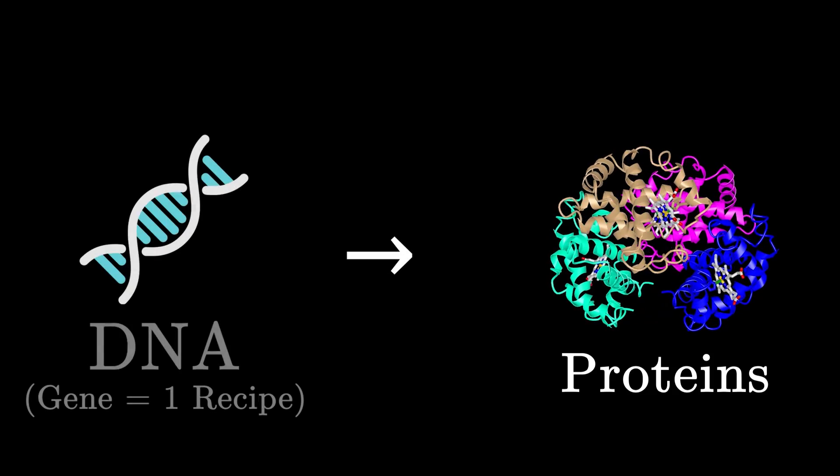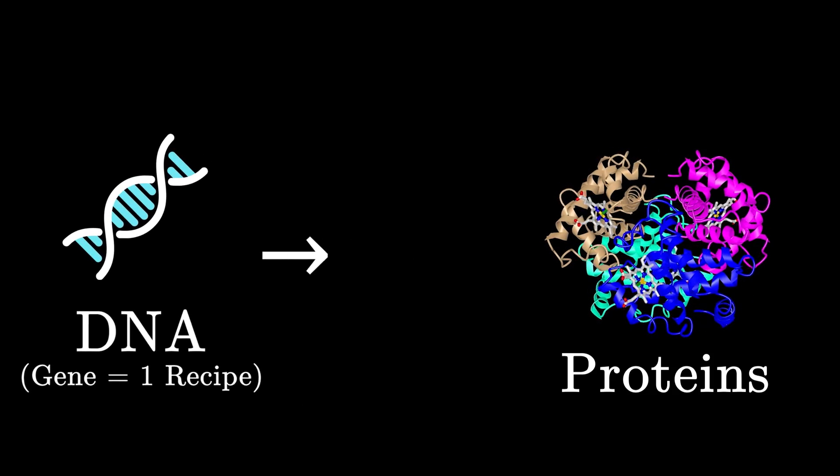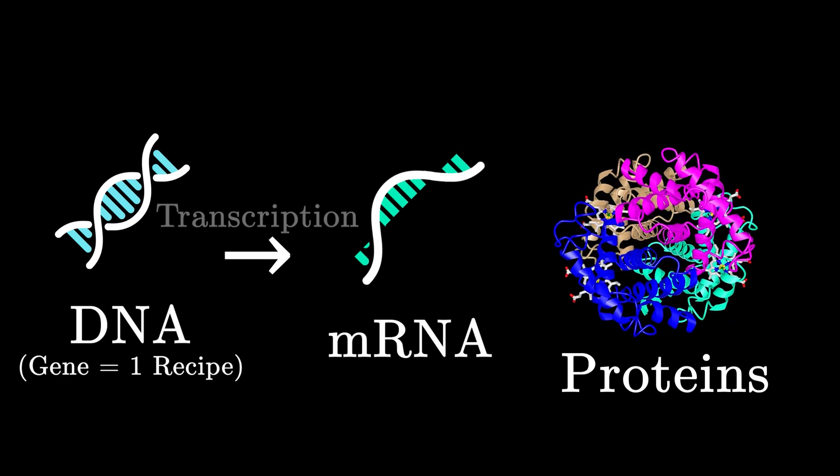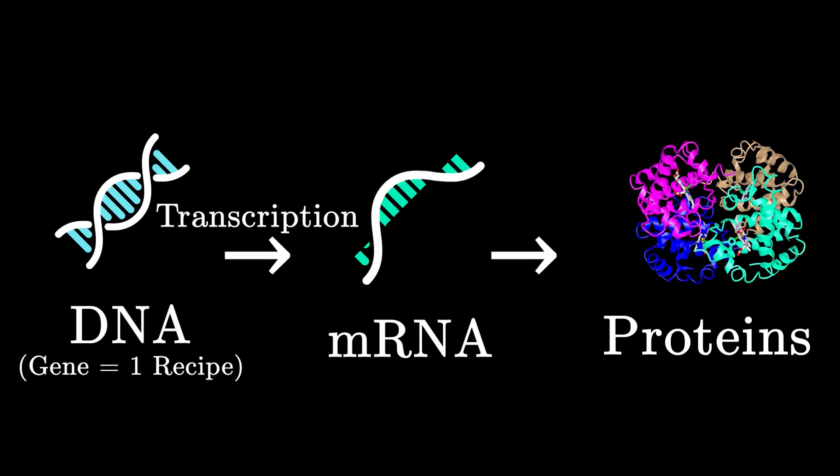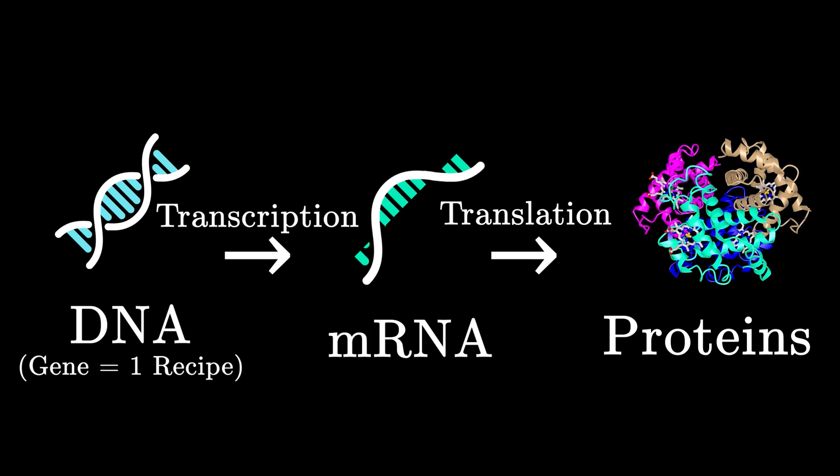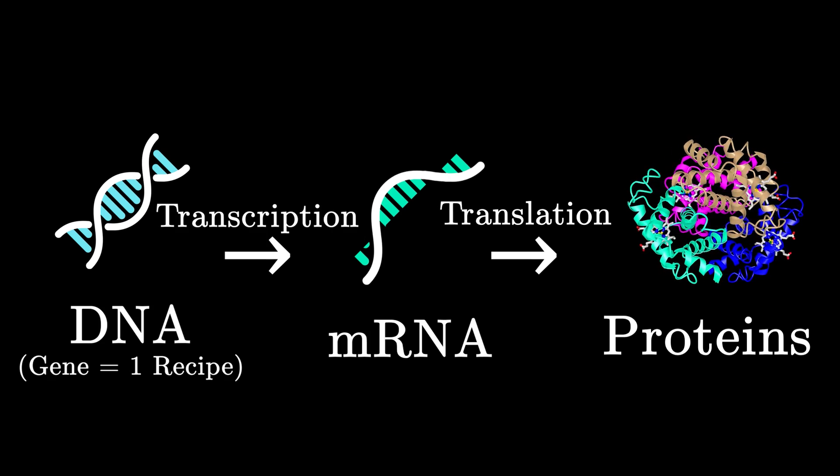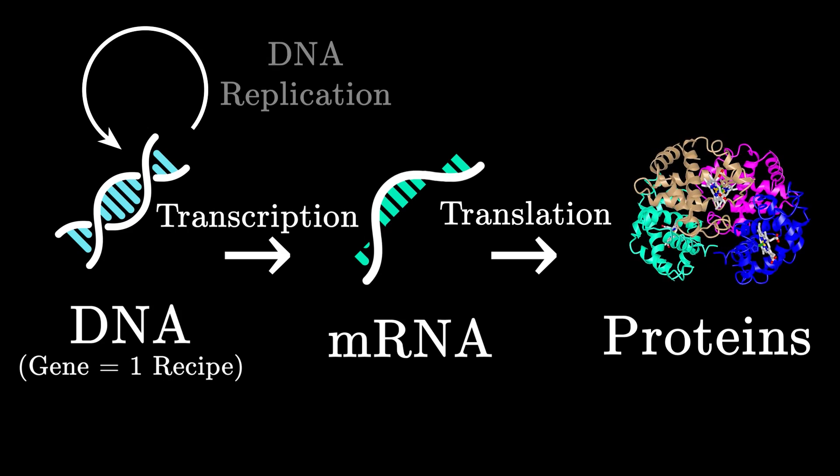To sum up, proteins are essential to life, and in order for cells to make proteins, it uses instructions encoded by genes in your DNA. The necessary gene is converted to mRNA through transcription, and that mRNA is used to actually create the protein through translation. And right before dividing, the cell copies all of its DNA in a process called DNA replication.